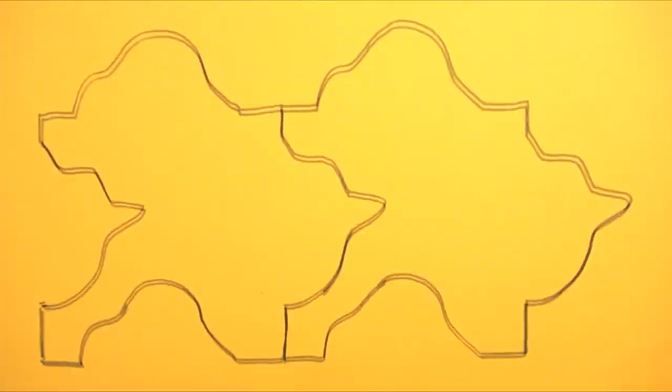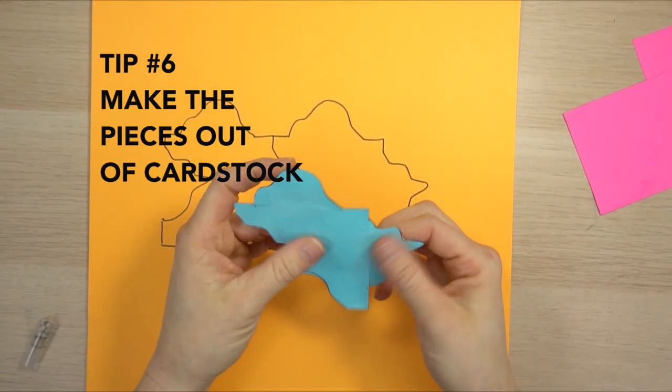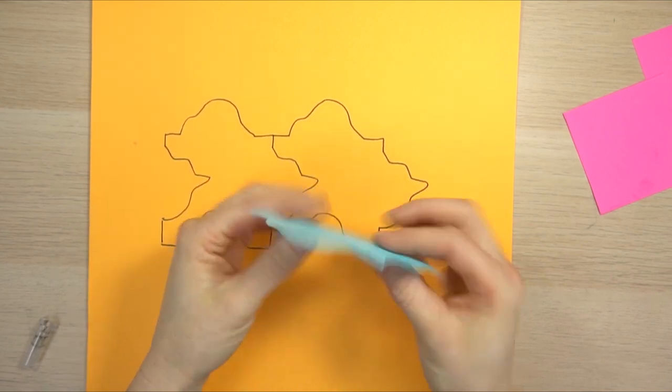If you are making these with younger children, you might want to make these out of cardstock, because then it's a little bit easier for them to trace and they're not going to bend and be as flimsy as just a normal piece of paper.